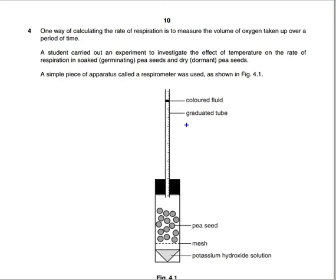One way of calculating the rate of respiration is to measure the volume of oxygen taken up over a period of time. A student carried out an experiment to investigate the effect of temperature on the rate of respiration in soaked germinating pea seeds and dry dormant pea seeds. So we've got two different types of pea seeds here, one that's germinating, therefore it's active, high respiration rate, and dormant pea seeds, which are going to have a very, very low respiration rate.